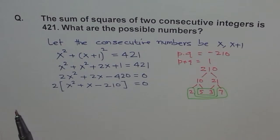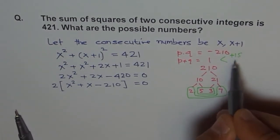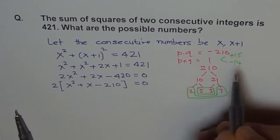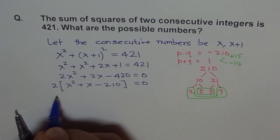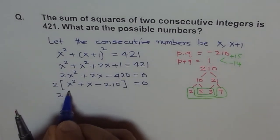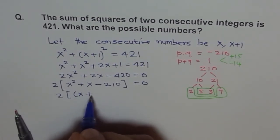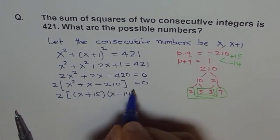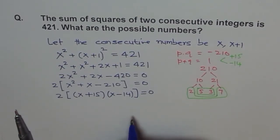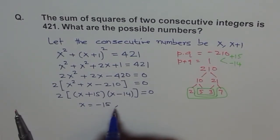So we get our numbers and our numbers are, because this is positive, positive 15 and negative 14. So we can write this in factored form as 2 times (X plus 15) times (X minus 14) equals 0. And this equation is 0 only if X equals minus 15 or X equals 14.